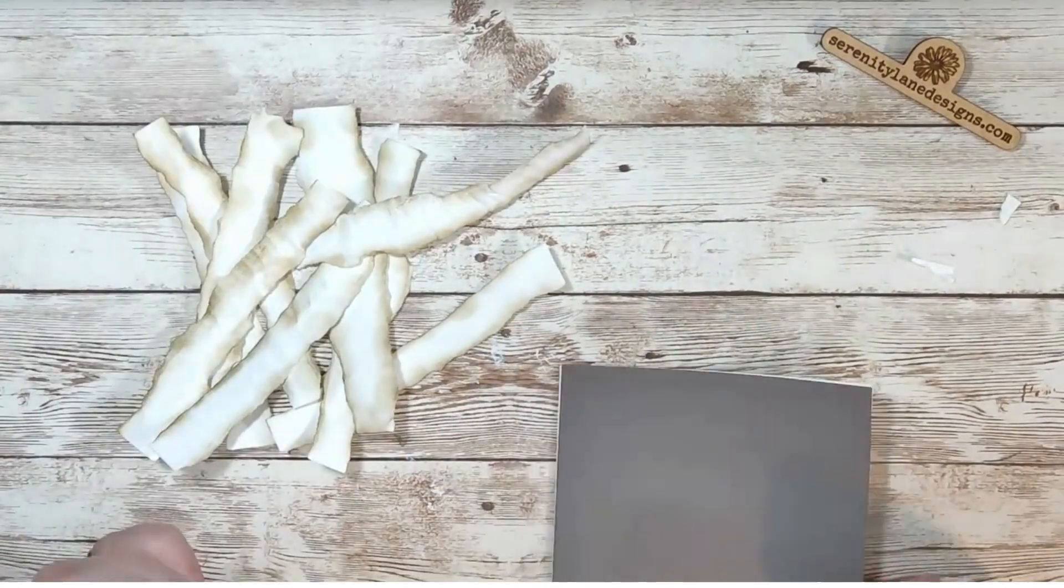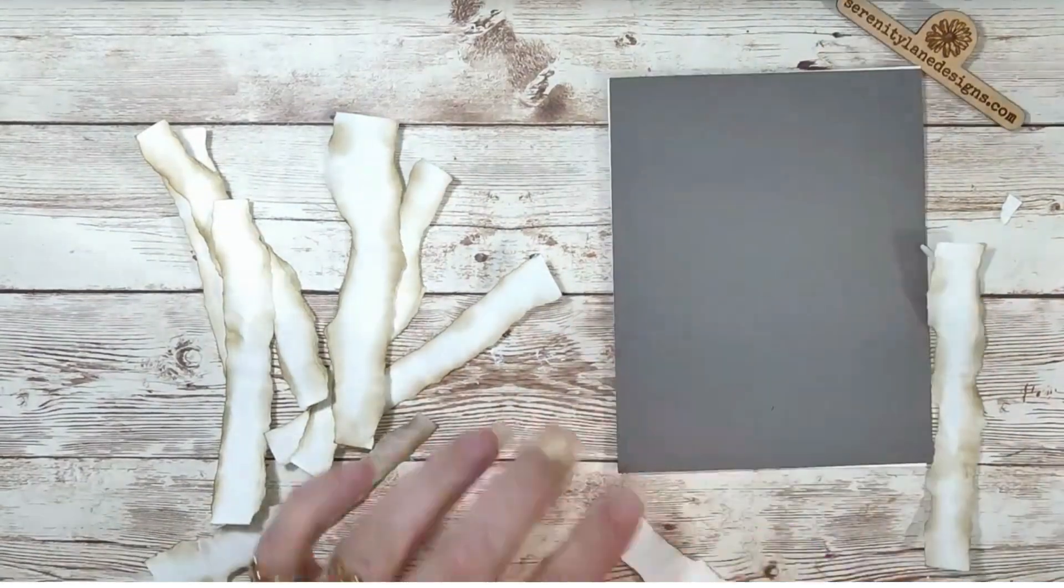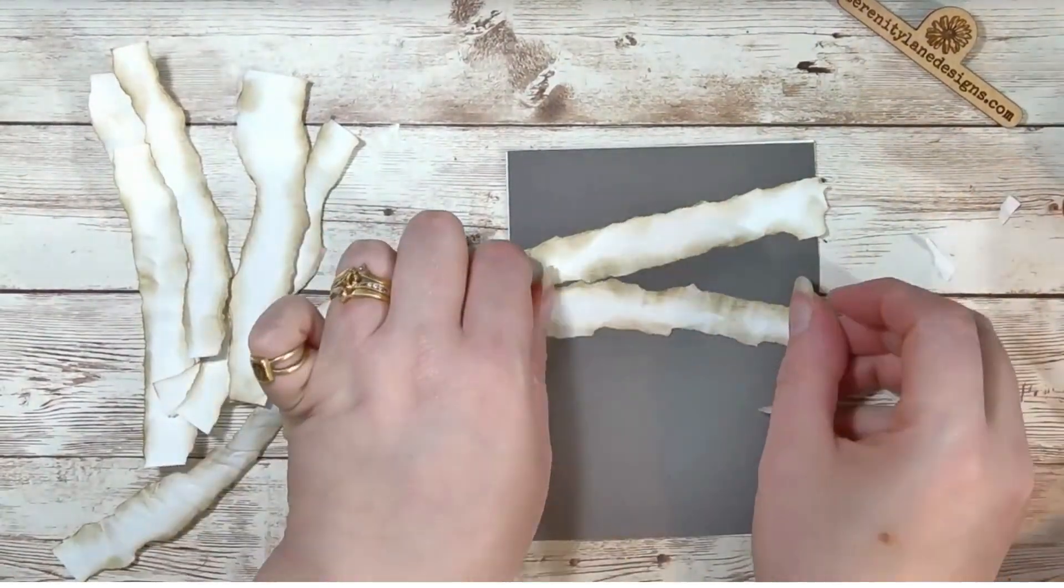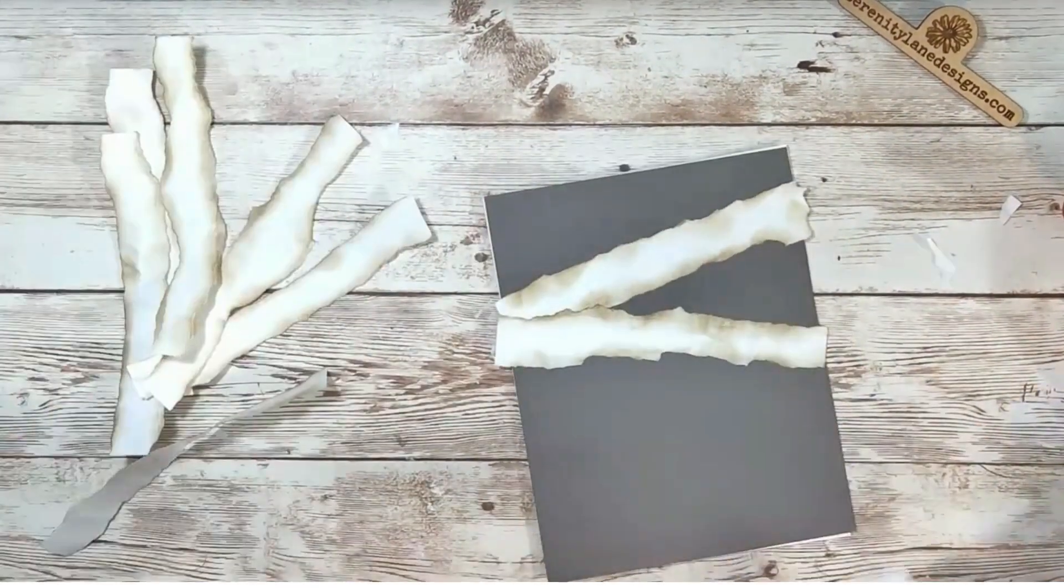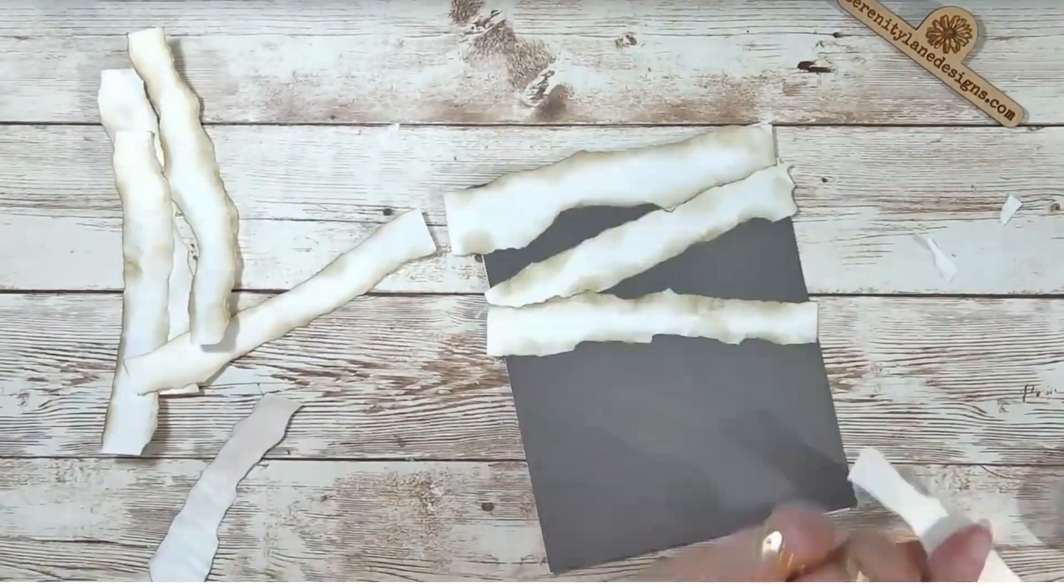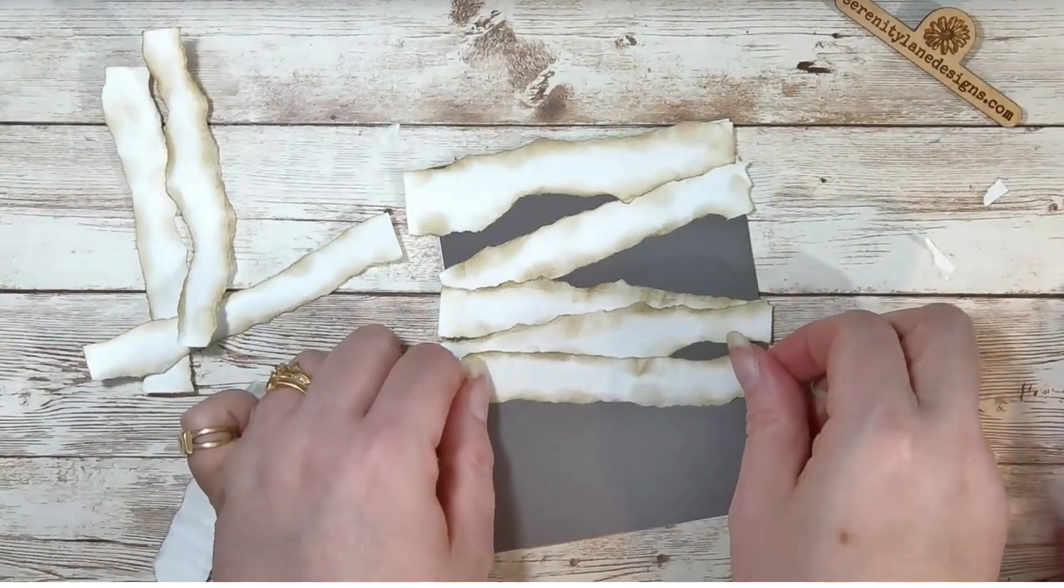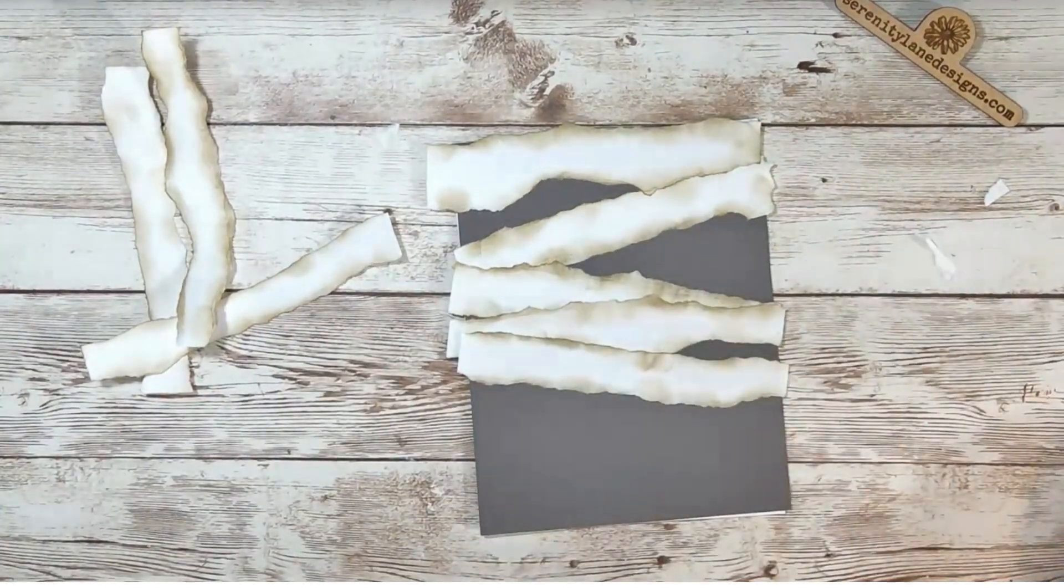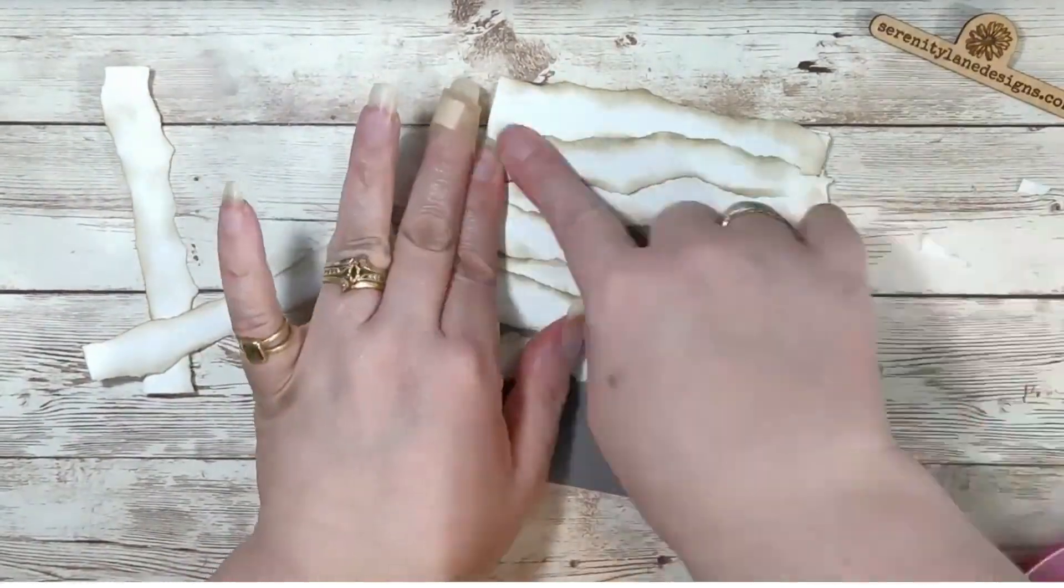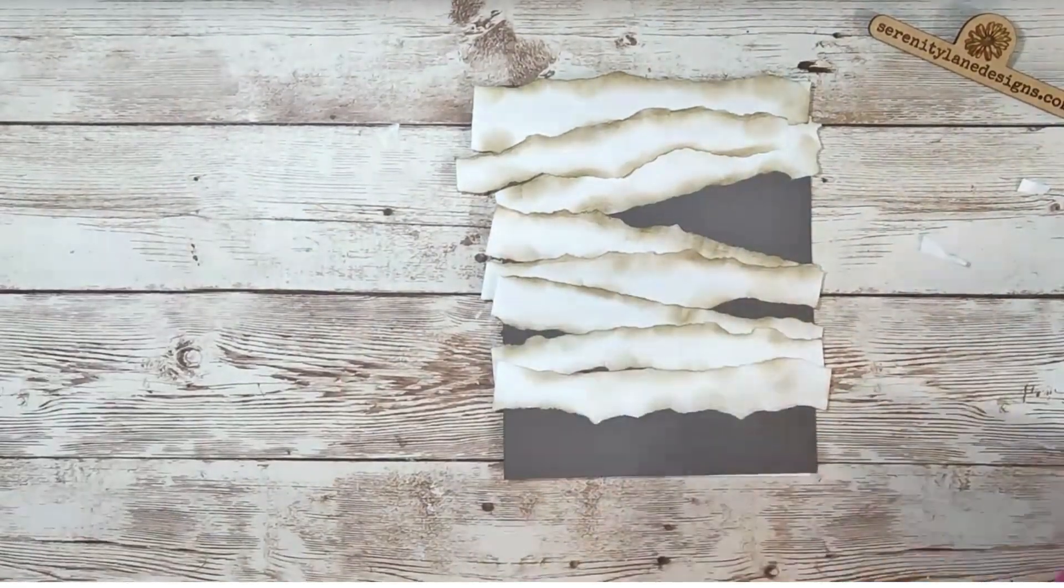Okay, now once they're all inked, you just have to decide where you want them. I'm going to position them so that there's a little bit of a hole where the mummy is peeking out. So I'm going to start with that first so I know where I want that, and then just fit the other pieces in as I'd like.